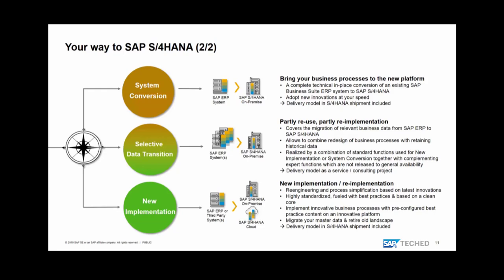Importantly, system conversion is a standard procedure. We offer tools for it — you can run it on your own, with a partner of your choice, or with SAP as a partner. The tooling is included in the shipment. New implementation (greenfield) can come from an ERP system or legacy system and can end up in any deployment model. It's process simplification based on our latest innovations, highly standardized, using best practices with a clean core.